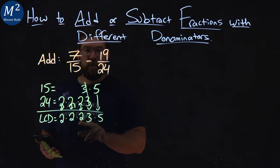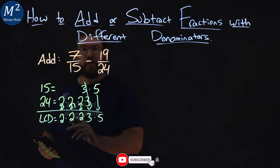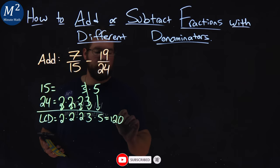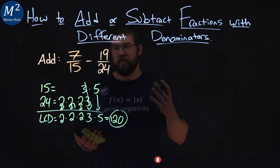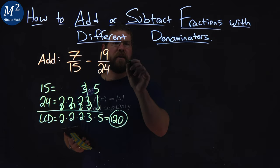5 times 3 is 15, times 2 is 30, times 2 is 60, times 2 is 120. So the LCD of these two fractions is 120, fairly large.